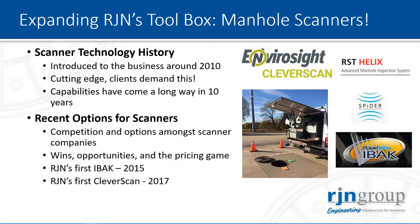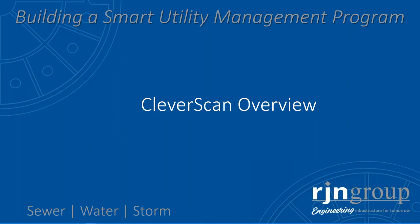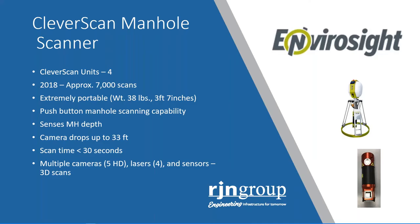There are quite a lot of technologies that have come around in the last 10 years — Cleverscan, IBAC, SPDR, Helix. RJN predominantly uses IBAC and Cleverscan. In 2018, RJN purchased four units of Cleverscan, and within that year we've been able to accomplish 7,000 scans.